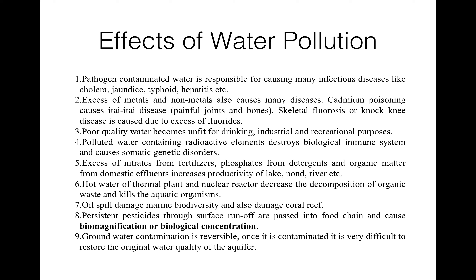Minamata disease — if you have heard about it — appeared in Japan in 1952 due to consumption of mercury-contaminated fishes. Mercury, lead, and methylmercury are all neurotoxic in nature. Poor quality water is unfit for drinking, industrial and recreational purposes. When water gets polluted by radioactive elements it may destroy the biological immune system and may cause somatic genetic disorder and gene mutation in living organisms.